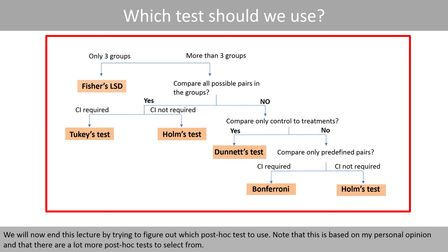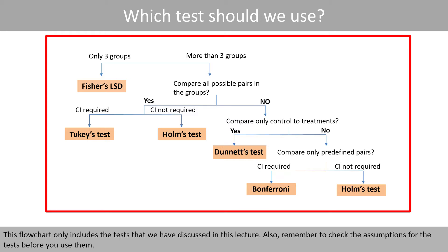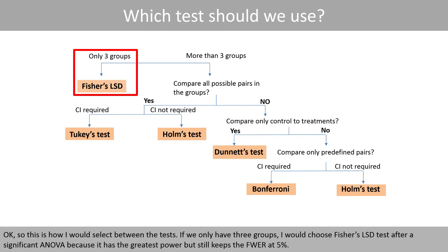We'll now end this lecture by figuring out which post-hoc test to use. Note that this is based on personal opinion and there are many more post-hoc tests available. This flowchart only includes the tests discussed in this lecture. Remember to check the assumptions for the tests before you use them. If we only have three groups, I would choose Fisher's LSD test after a significant ANOVA because it has the greatest power but still keeps the family-wise error rate at 5%.